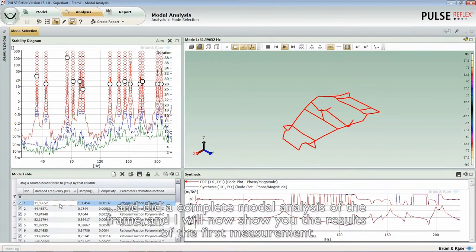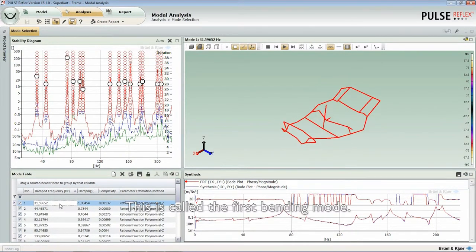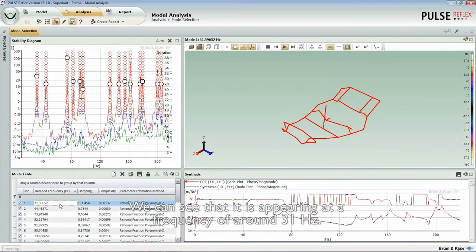I will now show you the results of the first measurement. This is called the first bending mode, and we can notice that it is appearing at a frequency around 31 Hertz.